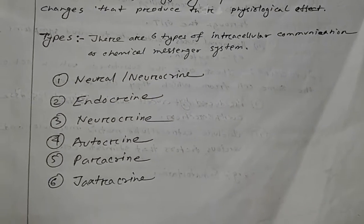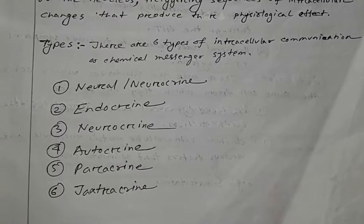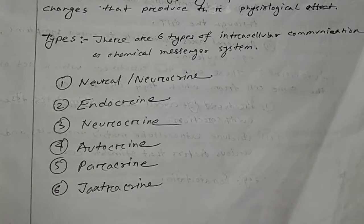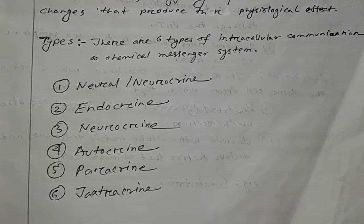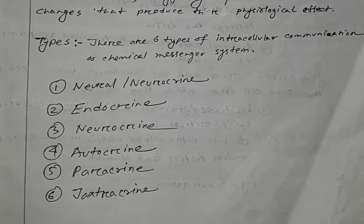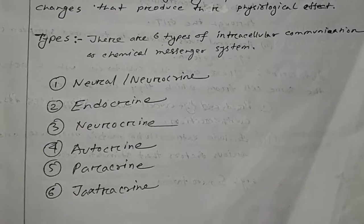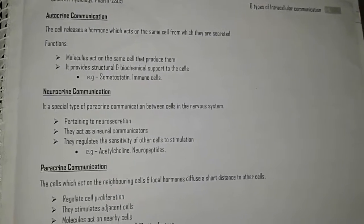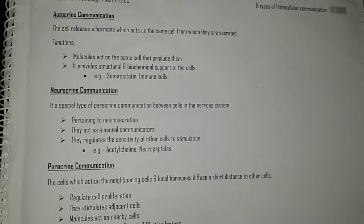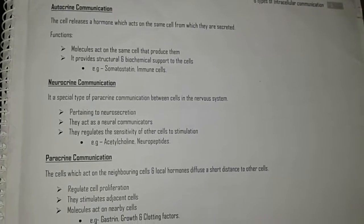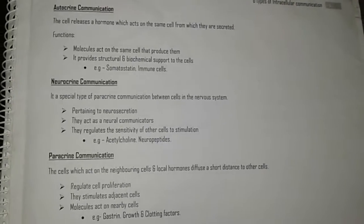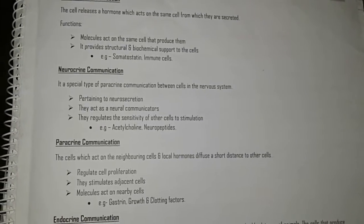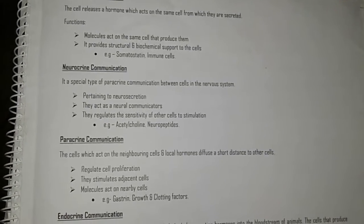Types: there are six types of cellular communication: chemical messenger, neuroendocrine, endocrine, autocrine, paracrine, and juxtacrine. Autocrine communication: the cell releases a hormone which acts on the same cell from which it is secreted. Molecules act on the same cell that produces them; it provides structural and biochemical support to the cells. Example: somatostatin, immune cells.